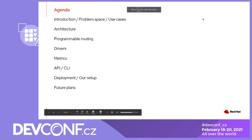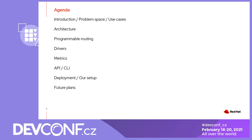What we have prepared for you today: we'll go into the introduction and problem space, show you the use cases we are trying to solve with this failover. Then we'll briefly look at the architecture of the service we've been creating, some details of its programmable routing drivers, metrics, API and CLI — the main interfaces. We'll show you how you can deploy the service yourself, our setup, and future plans.